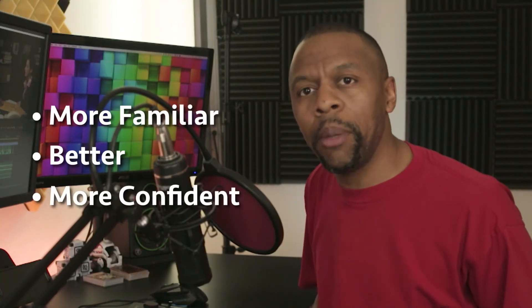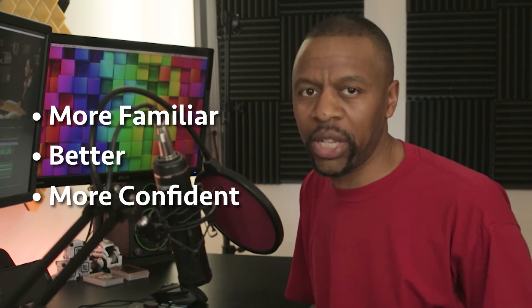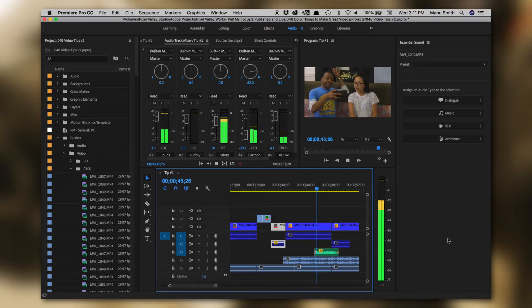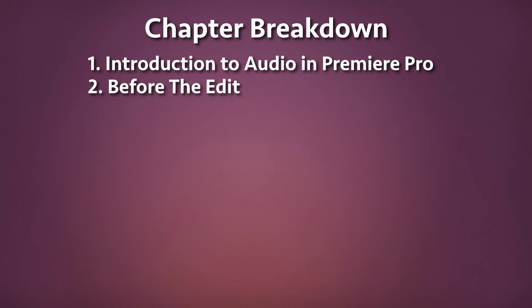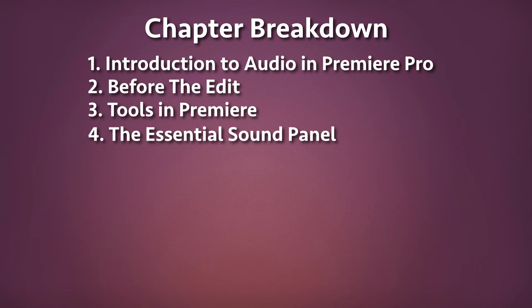This series will help you become more familiar, better, and more confident making your audio just as impactful as your visuals. If you're using Premiere Pro, you're in luck — Adobe has included a suite of tools to help you go from good sound to great sound, but only if you know how to use them. In this course, we'll start with what you should think about even before you hit that import button and bring in your audio assets. We'll then take a look at the tools available in Premiere, from the audio timeline to the meters and mixers, and also the plugins. We'll look at the Essential Sound panel — Premiere's toolset for audio sweetening.